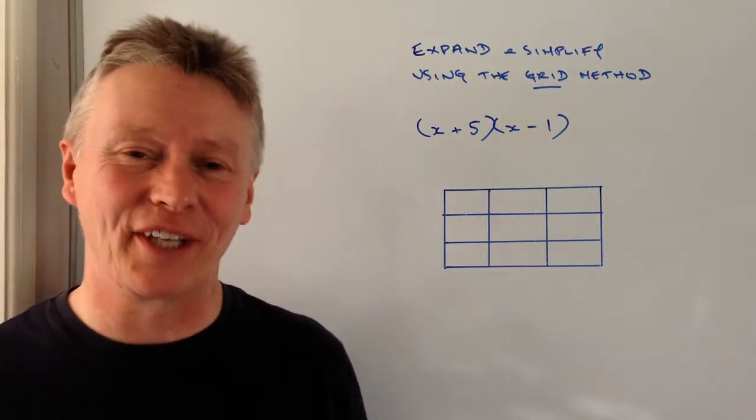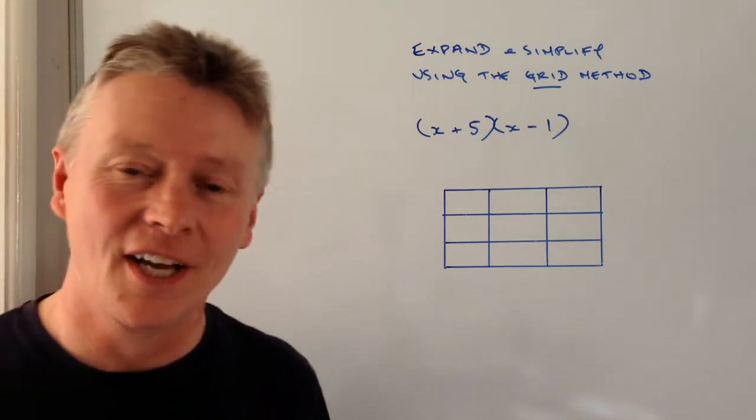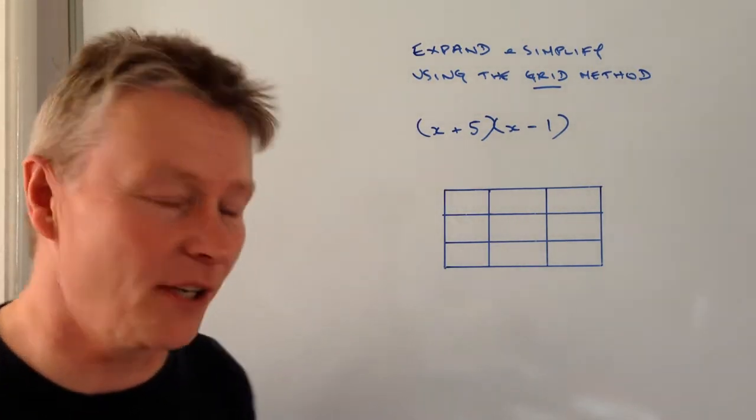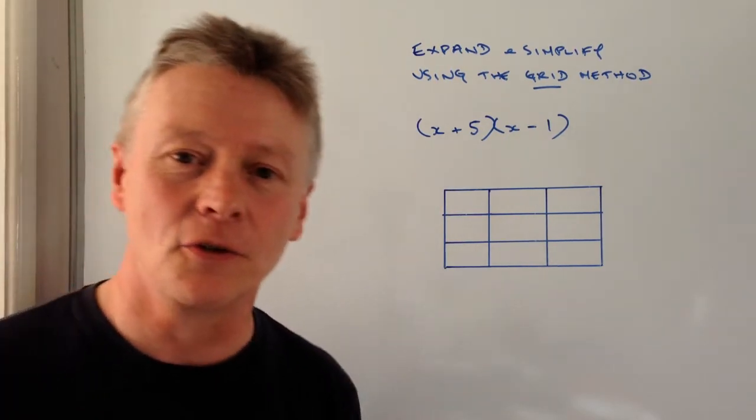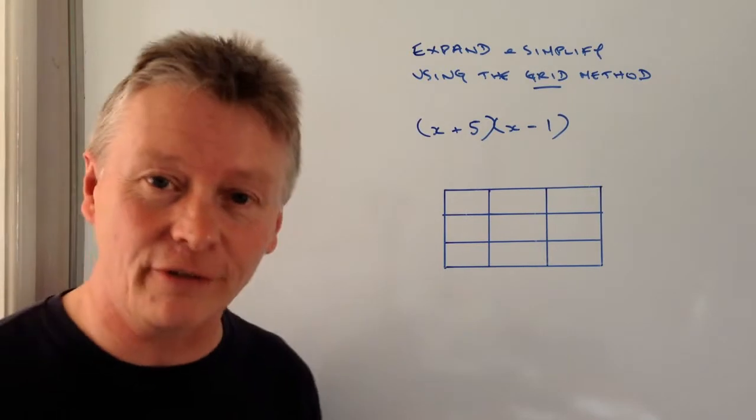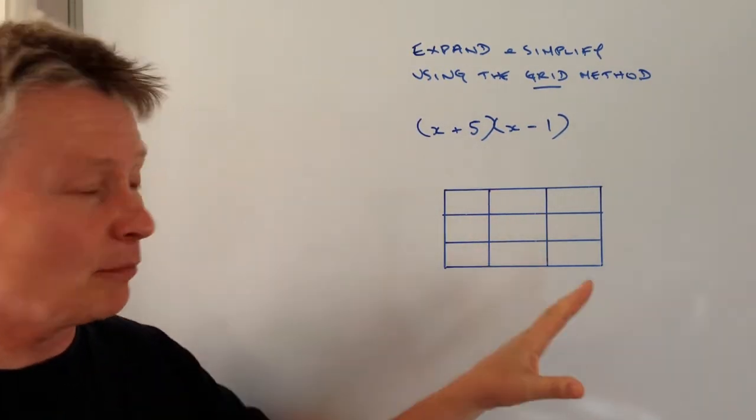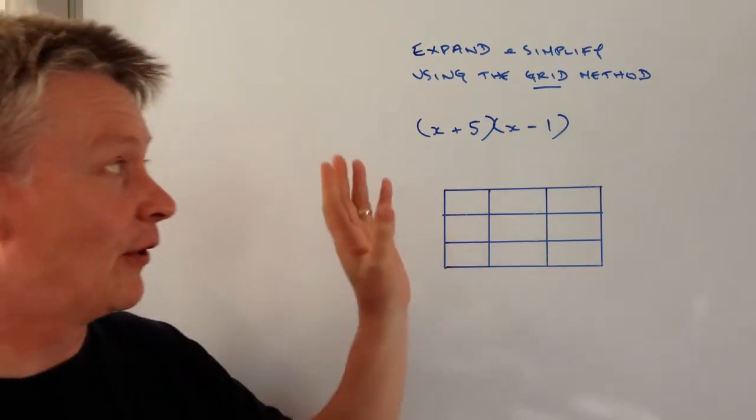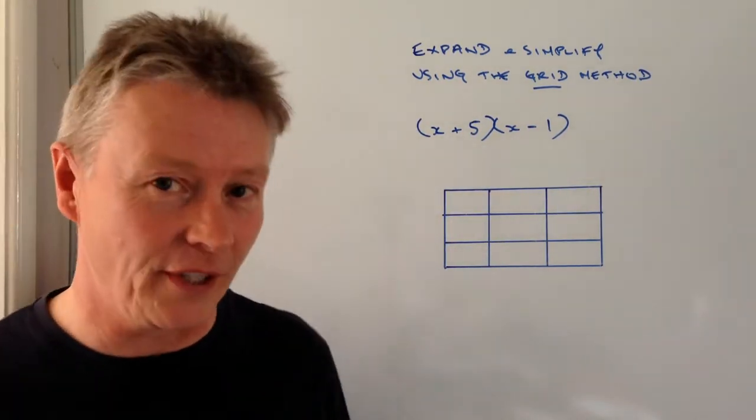Hi, in this particular video we're going to be looking at expanding and simplifying this double bracketed terms, but this time we're going to use the grid method in order to do that. Now this isn't normally the kind of video I would normally do because it's not directed within the GCSE material, but I know some people use the grid method for expanding and simplifying these types of terms, therefore I just thought I'd post a quick video about it.